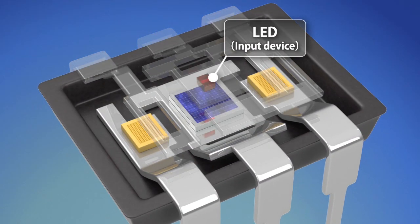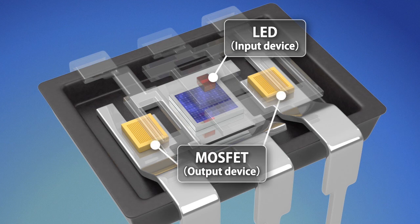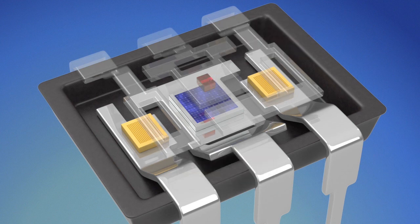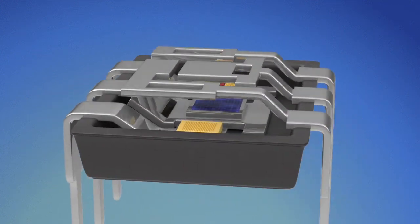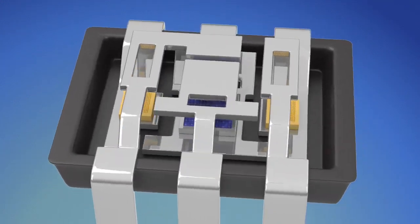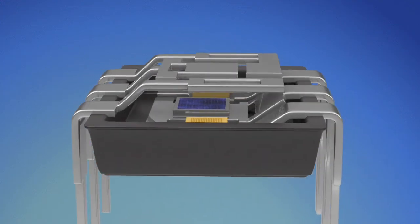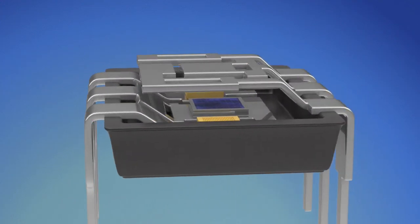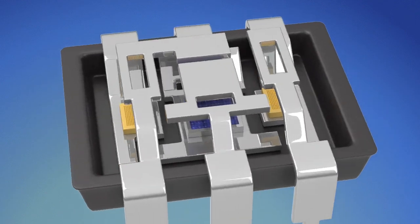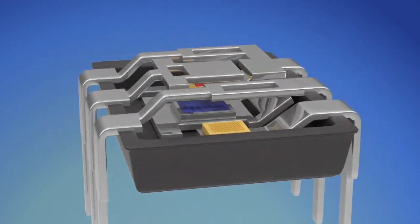A PhotoMOS is a semiconductor device that uses an LED for the input device and a MOS FET for the output device. Unlike mechanical relays, semiconductor devices have no mechanical contacts, so they have benefits such as high switching reliability and long life, along with less sound, high speed operation, small size, and low power consumption.